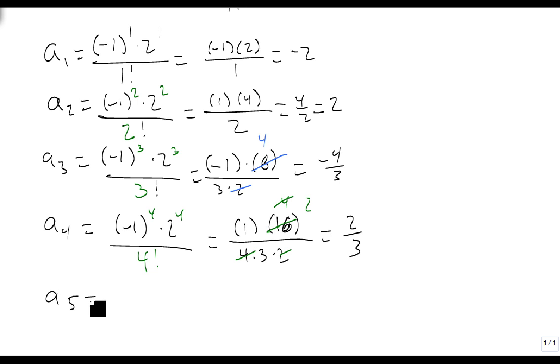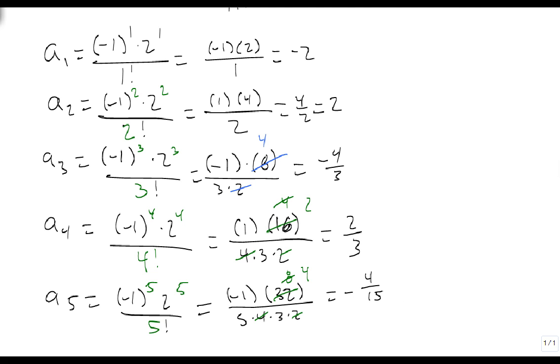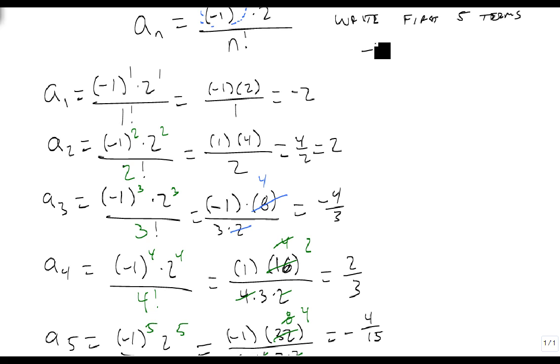a_5 = (-1)^5 × 2^5 / 5! = -1 × 32 / (5×4×3×2). 32 and 4 is 8, 8 and 2 is 4, so we end up with -4/15.